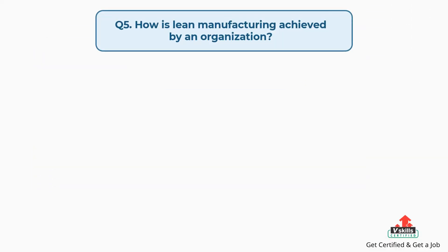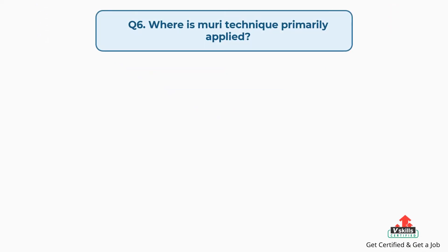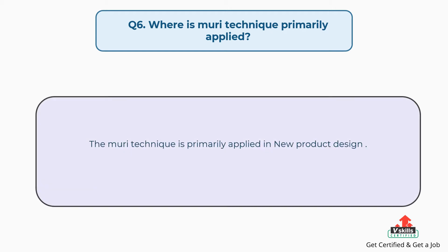Question number five: how is lean manufacturing achieved by an organization? The answer is, lean manufacturing is achieved by an organization through elimination of waste. Question number six: where is the Mori technique primarily applied? The answer is, the Mori technique is primarily applied in new product design.